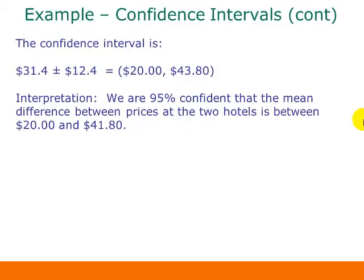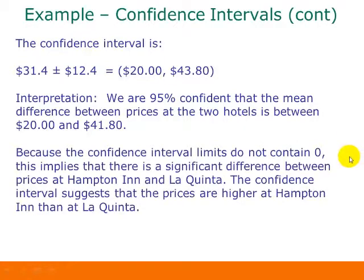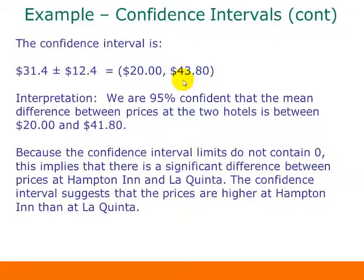We are 95% confident that the mean difference between prices at the two hotels is between $20 and $41.80 — meaning if you stay at Hampton Inn you'll pay between $20 and $41.80 more than at a La Quinta in the same city. Since the confidence interval does not include zero, this confirms a significant price difference. If the interval had included zero, that would suggest the two prices could be the same.